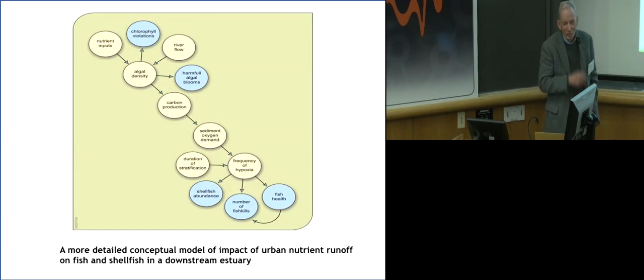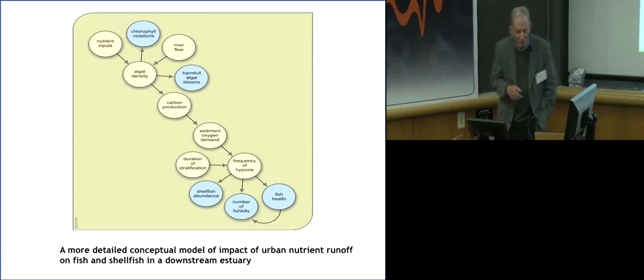And so that's my conceptual model. And to make it more nerdy, we can make this into circles instead of a picture. And it shows that nutrient inputs on the top and river flow cause the algae growth. And algae density, and that produces carbon, and that produces an oxygen demand, and eventually it works down into the estuary where the fish are.